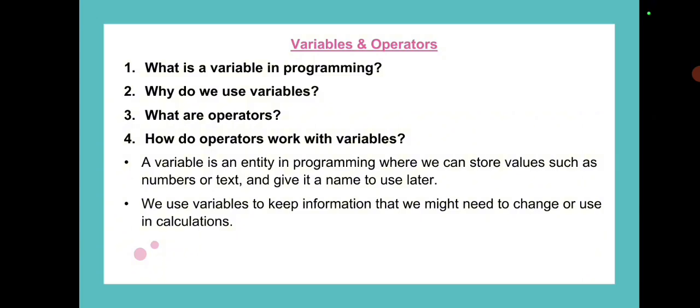A variable is basically in programming where we can store values such as numbers, text and give it a name to use later. Variable, vari means change, so variables can change at execution time. We use variables to keep information that we might need to change or use in calculations.